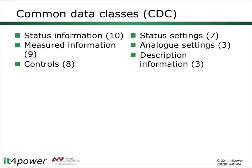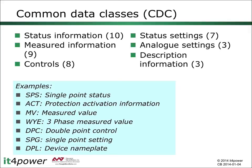The structure of a data object is defined through the common data class, which can be considered as a structured type definition. Common data classes are defined in part 7.3 of the standard and are grouped according to their main characteristics. Examples include SPS for single point status, ACT for protection activation information, MV for measured values, WYE for three-phase measured values, DPC for controls, SPG for status settings, and DPL for description information.